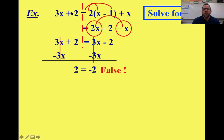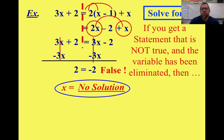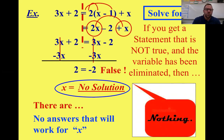2 = −2 is a false statement — two dollars and negative two dollars are not the same thing. The variable x has been completely eliminated. Since the statement is false and the variable is gone, the answer is: no solution. There is no value that could make this equation work — it was never actually balanced to begin with. We only discovered that after solving.